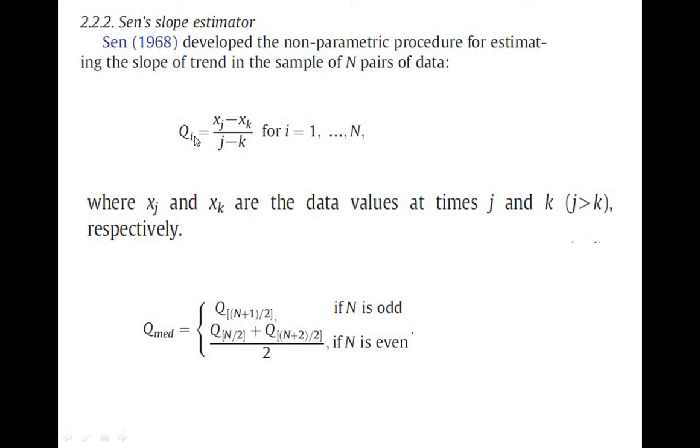First of all, this is Sen's Slope estimator, and it is equal to (xj minus xk) divided by (j minus k). I will explain this in an example. I am just giving you the overview.